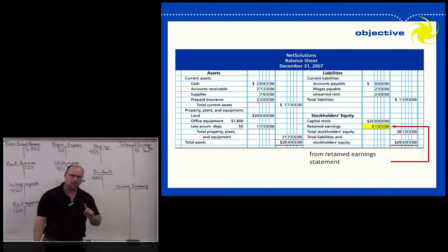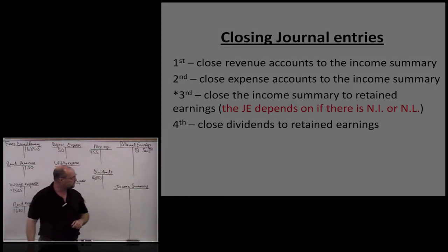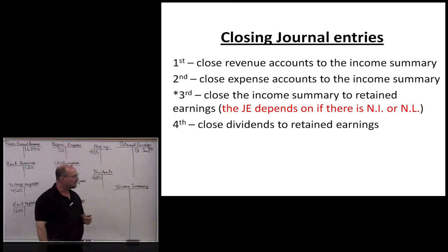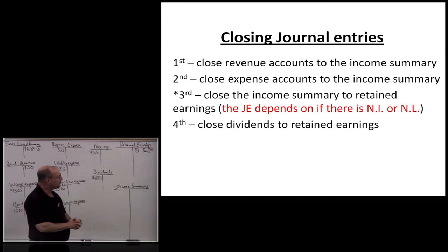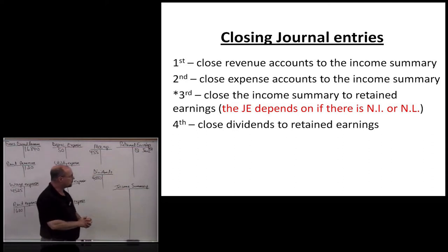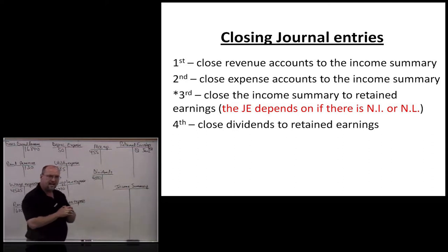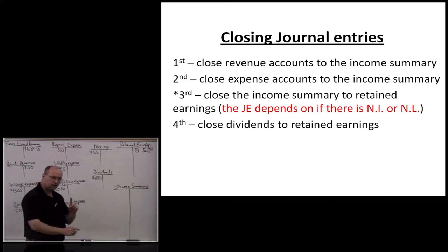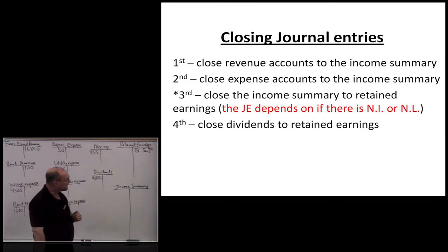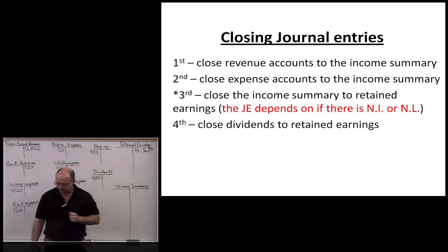Now that we have our financial statements, it's time to close the temporary accounts: revenue, expense, and dividends. Here's the process for closing journal entries. First, close the revenue accounts to the income summary. Second, close the expense accounts to the income summary. Third, close the income summary to retained earnings — be careful here, because if we have net income it's one journal entry; if we have net loss, it's the opposite. And fourth, if we paid a dividend, close dividends to retained earnings. If no dividend was paid, there would only be three closing entries.